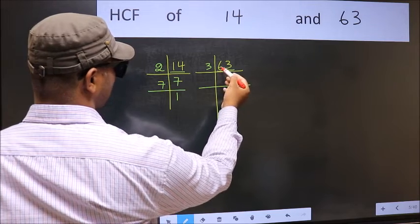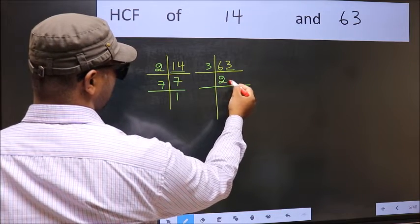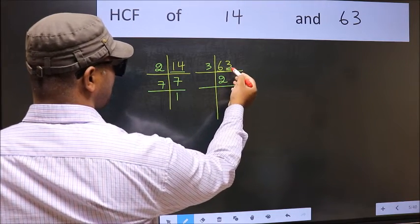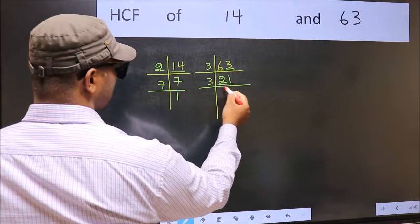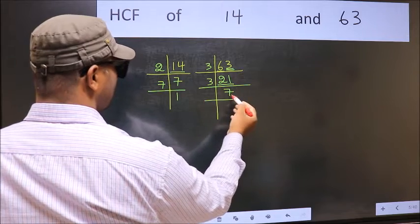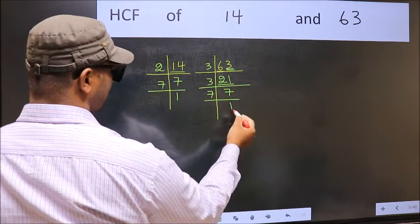First number 6. When do we get 6 in the 3 table? 3 times 2 is 6. The other number 3. When do we get 3 in the 3 table? 3 times 1 is 3. Now 21 is 3 times 7. 7 is a prime number, so 7 times 1 is 7.